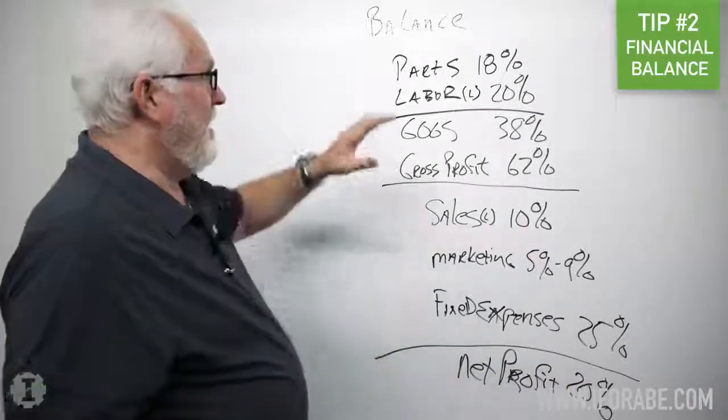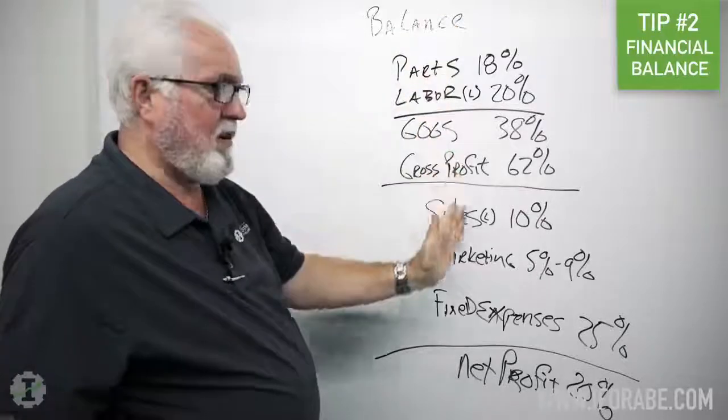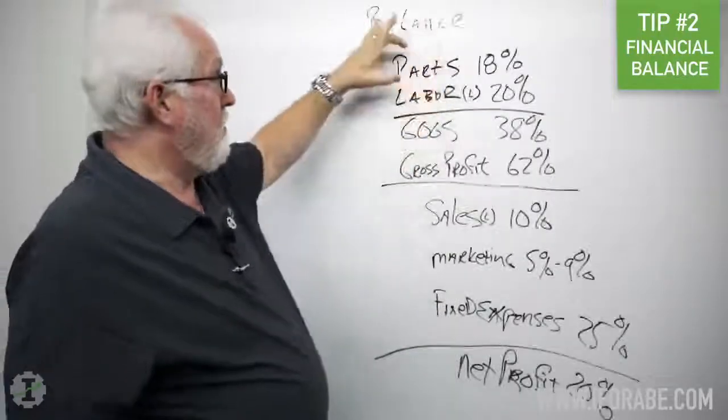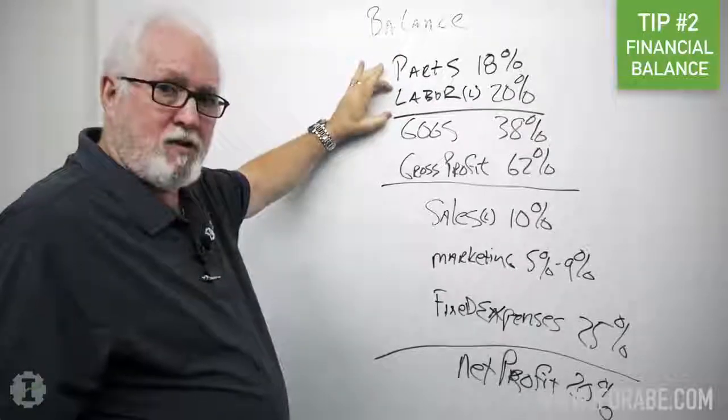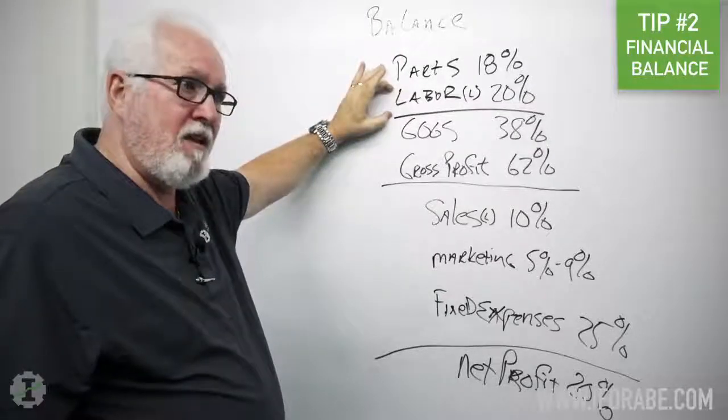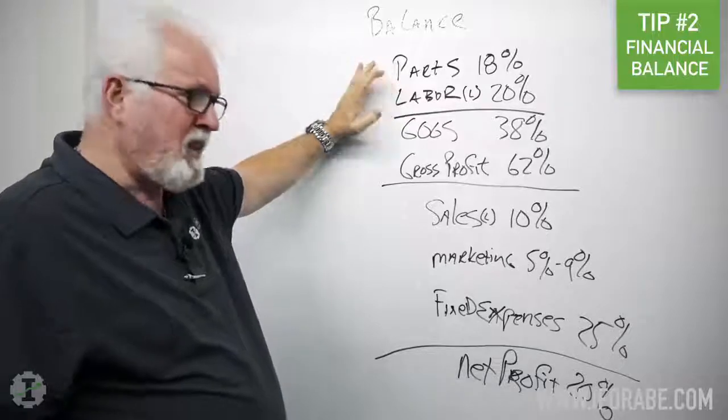So I'm gonna end up with about 7%, 8% if I do a good job at 20%. Now let's take a company where they planned it all out and they've used a matrix to price their parts, they know what they're doing with their labor, they know what their labor rate is, their effective labor rate. Let's mess it up.